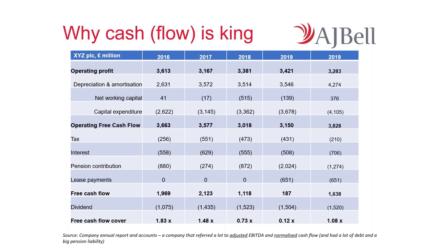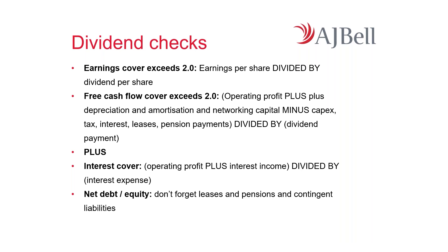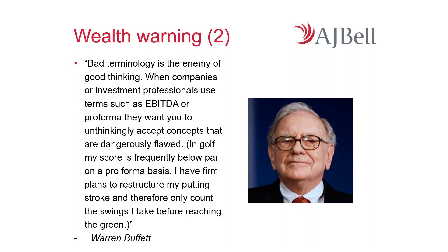You might not have got it looking at just the P&L, but you'd have got it looking at the P&L in conjunction with the cash flow and the balance sheet - because the balance sheet drives the interest payments, pension contributions, and lease payments. The cash flow gives you the working capital and capital investment calculation. So for dividend checks: you want to see earnings cover exceeding 2.0 - that's earnings per share divided by dividend per share. You want to see free cash flow cover exceeding 2.0. Plus check interest cover, and check the balance sheet net debt to equity, not forgetting leases, pensions, and contingent liabilities. And on that topic - Buffett: 'Bad terminology is the enemy of good thinking. When companies or investment professionals use terms such as EBITDA or pro forma, they want you to unthinkingly accept concepts that are dangerously flawed. In golf, my score is frequently below par on a pro forma basis. I have firm plans to restructure my putting stroke and therefore only count the swings I take before reaching the green.'